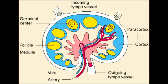Where is the pericortex of the lymph node located? The pericortex is located between the follicles and the medulla. The pericortex contains T-cells, and it also contains high endothelial venules through which B and T-cells enter from the bloodstream. So it's this region where B-cells and T-cells enter into the lymph nodes.